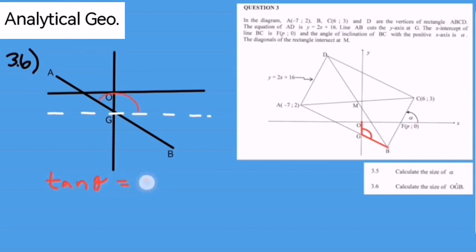The gradient of AB will be negative a half since AB is perpendicular to AD. Therefore, the angle of inclination is 153.43 degrees.